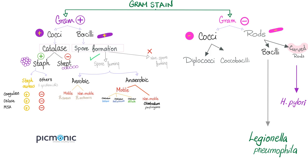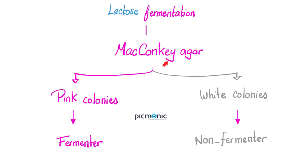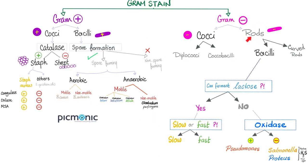MacConkey agar is a medium that helps you differentiate between bacteria that ferment lactose — they appear as pink colonies — and those that cannot ferment lactose, which appear as white colonies. With gram negative rods, we ask: can you ferment lactose? On MacConkey agar, if yes, you appear pink, and the next question is slow fermenter or fast fermenter. If no, you appear as a white colony.